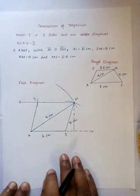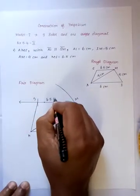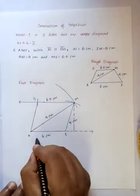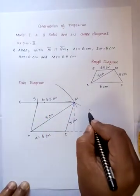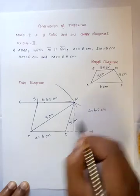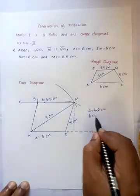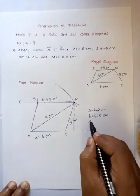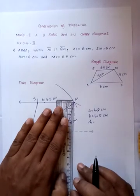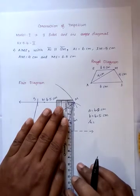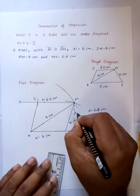We have now completed the trapezium AIMS. The parallel sides are AI and SM, where AI is equal to 6 cm (side a) and SM is equal to 6.5 cm (side b). The height of the trapezium is measured as 4.8 cm.